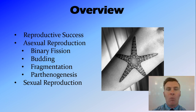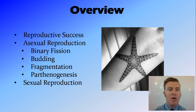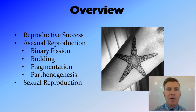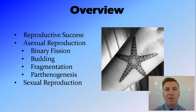We've covered budding, where offspring grow off the parent organism until they're ready to drop off and form their own smaller organism. Fragmentation, where the parent is broken but that broken piece can grow into a whole new organism. And parthenogenesis, where if an egg isn't fertilized, an organism can still go on to produce an offspring.